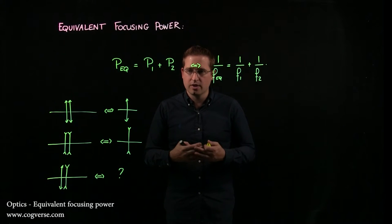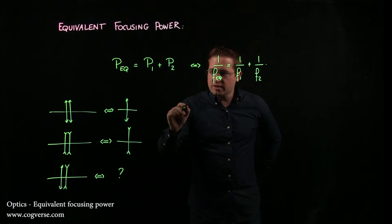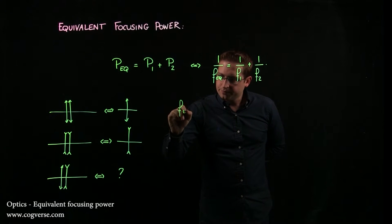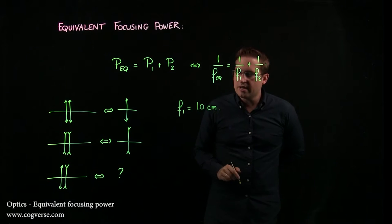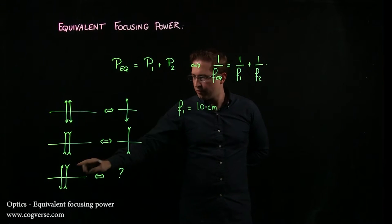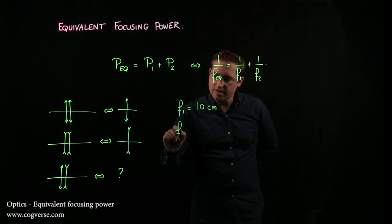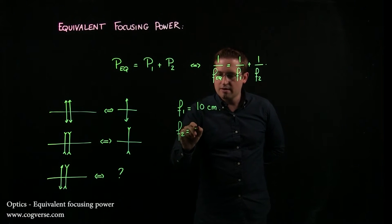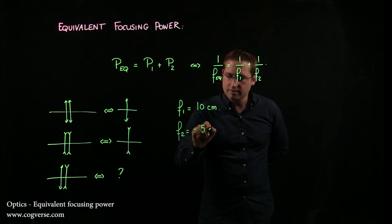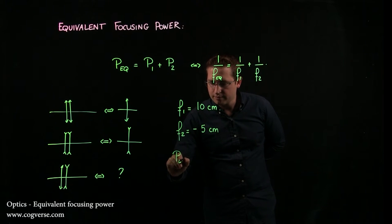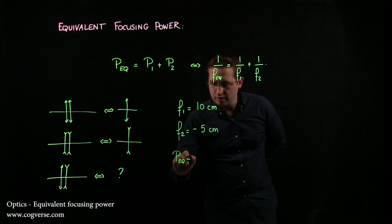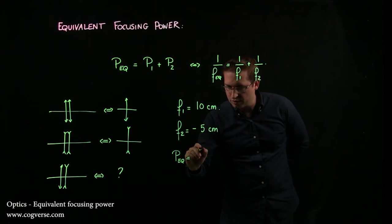Say for example that we take f1 is equal to 10 centimeters, and that is a converging lens, the first one. The second one is a diverging lens, and it's minus 5 centimeters. Well, then the equivalent focusing power is going to be 1 over f1 plus 1 over f2.